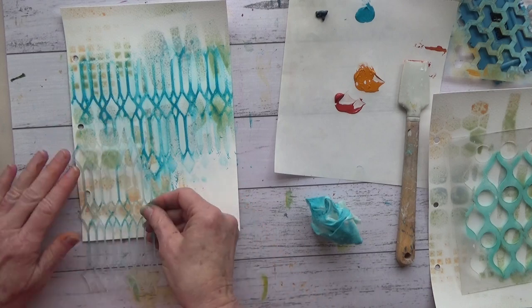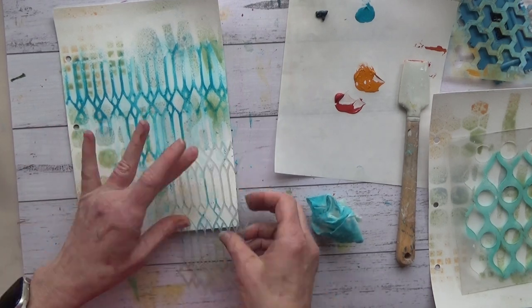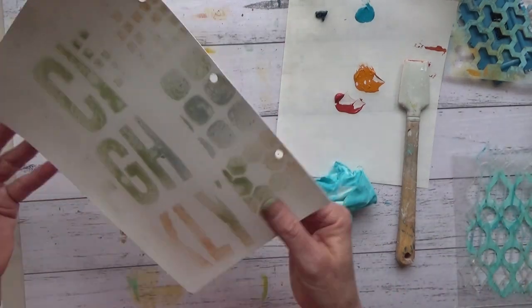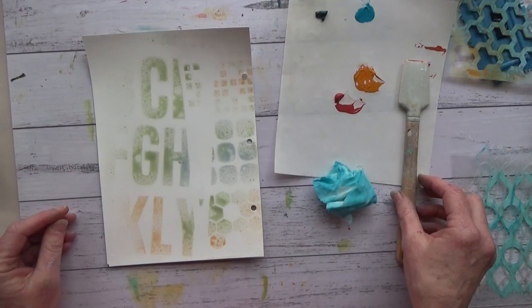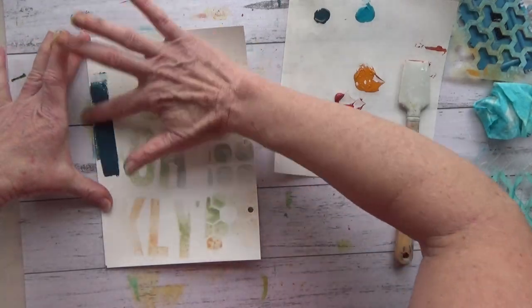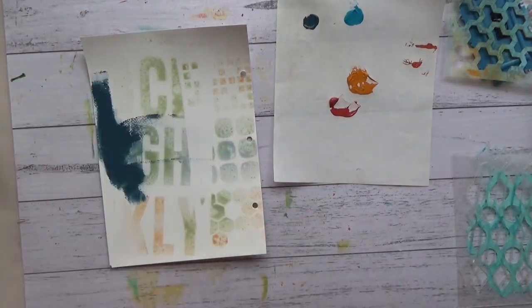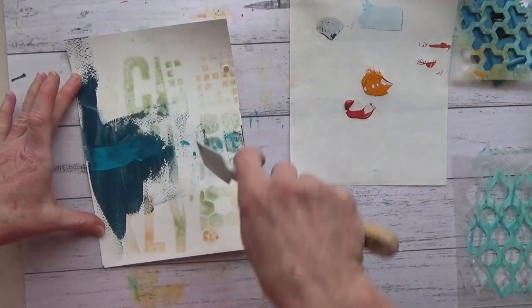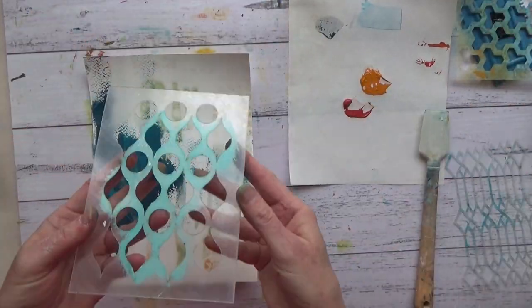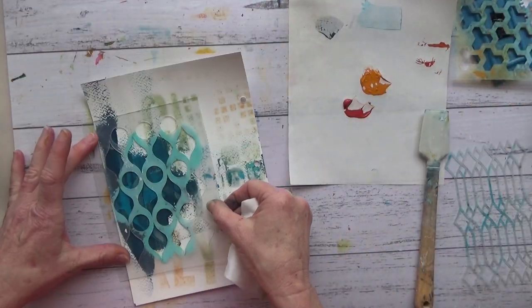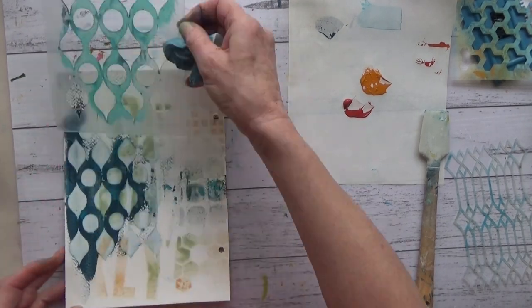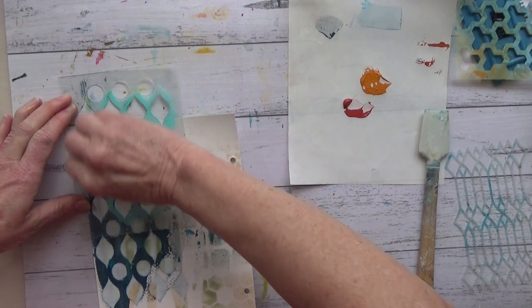And if there's any paint left on the stencil, stamp it around—just adds to the design. Yes, I have no idea which way is up on any of these pages. I make up that as I go along. And once I feel that I want to work on it and finish the page, that's when I'll decide which way's up.